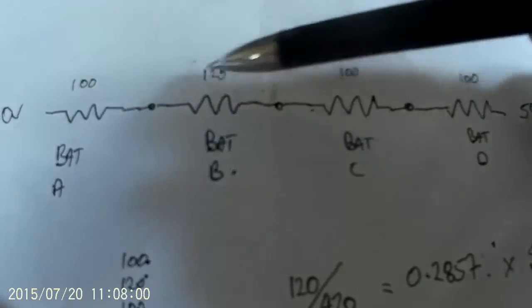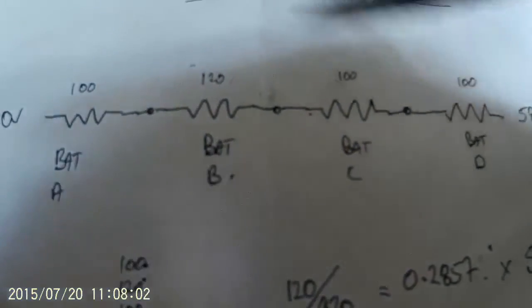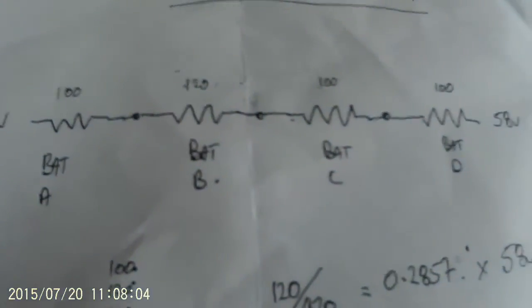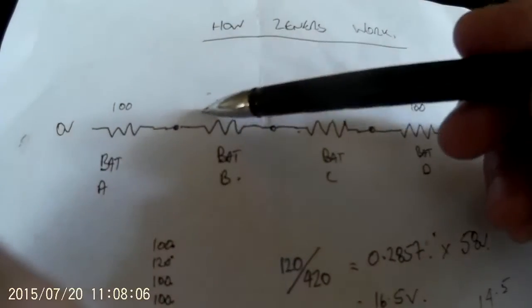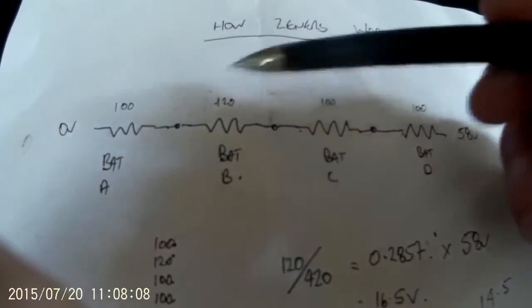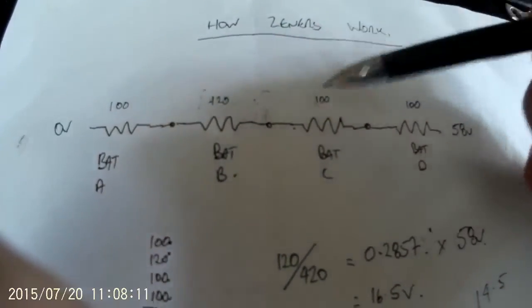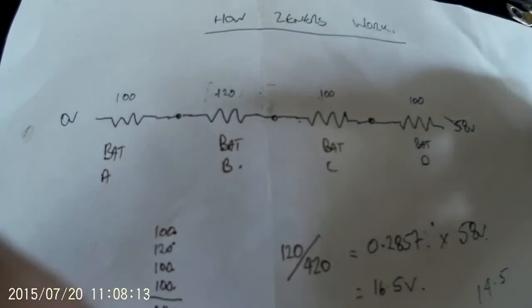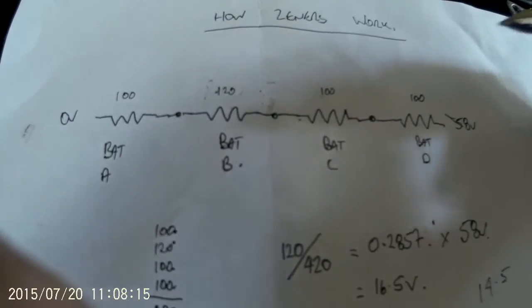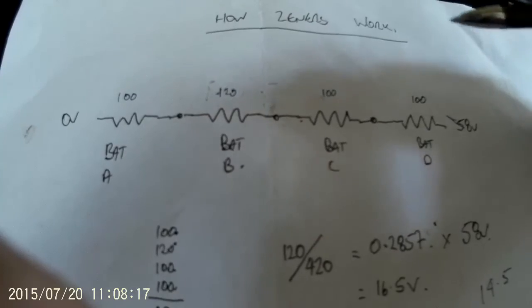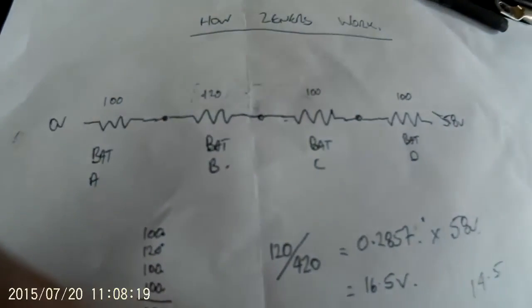But yeah, they work pretty well, and what happens is, as each battery starts to catch up, the little LED light on the Xena regulators will light. And basically when all of the lights are on, which is right towards the end of Absorb, your batteries are then balanced. Okay, cheers.